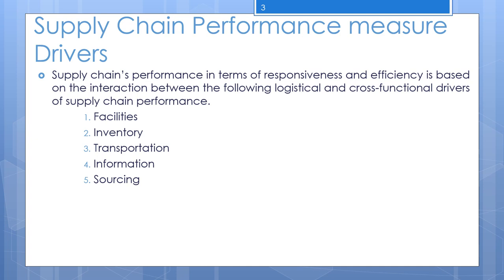A product-focused facility performs many different functions — for example, fabrication and assembly — in producing a single type of product. A functional-focused facility performs only a few functions, such as fabrication or assembly, on many types of products. A product focus tends to result in more expertise about a particular type of product, at the expense of the functional expertise that comes from a functional methodology.